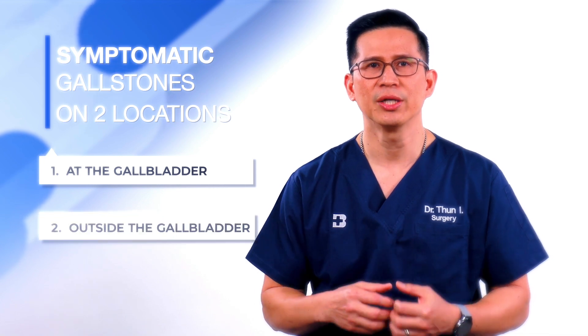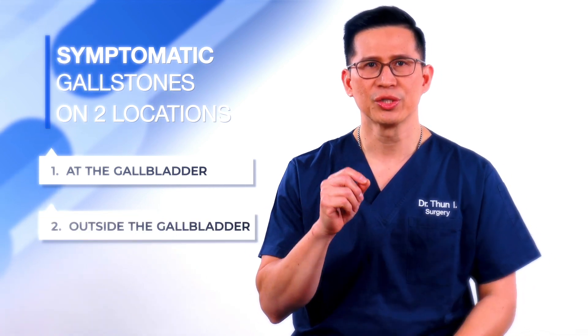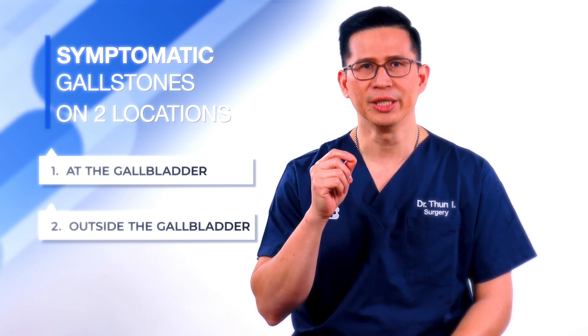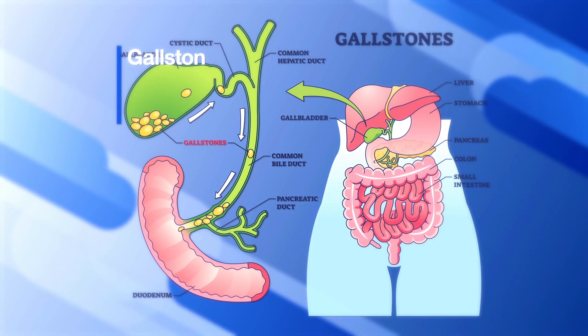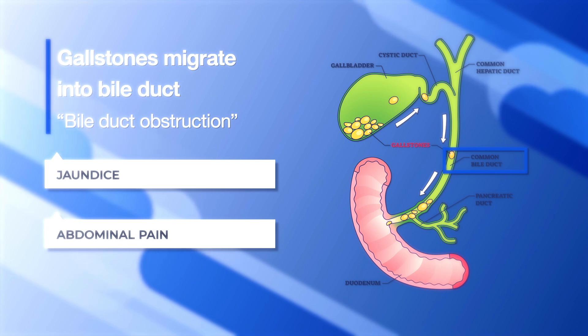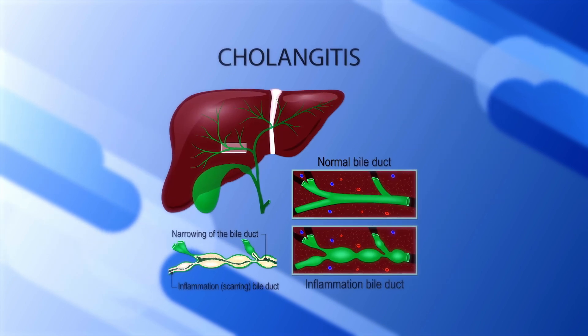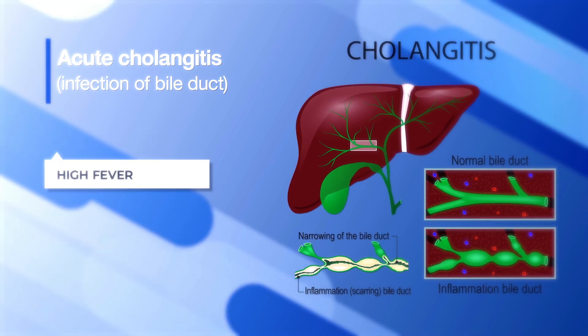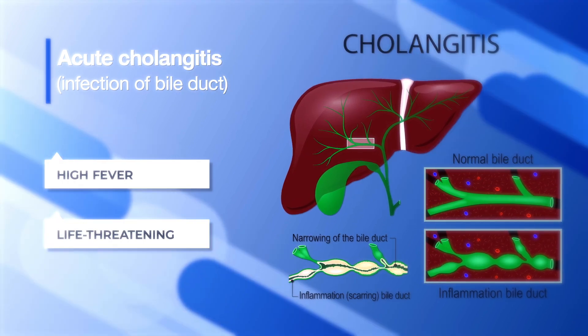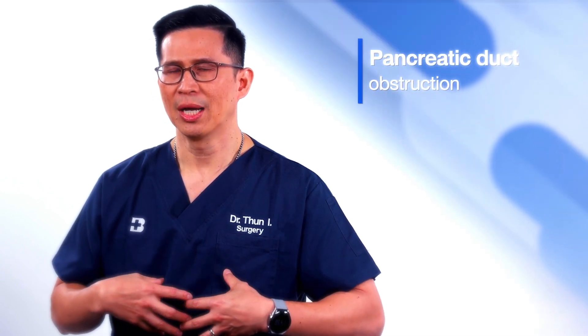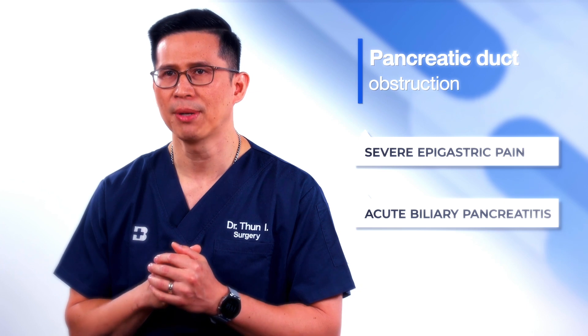The second location is outside the gallbladder, which is the bile duct. If the stone drops from the gallbladder into the bile duct, it may cause obstruction. The patient will present with jaundice or abdominal pain. If the patient has infection — what we call cholangitis — they will present with high fever, which can sometimes be life-threatening. Also, if the stone obstructs the pancreatic duct, which drains into the bile duct, it will cause severe epigastric pain, which we call acute biliary pancreatitis.